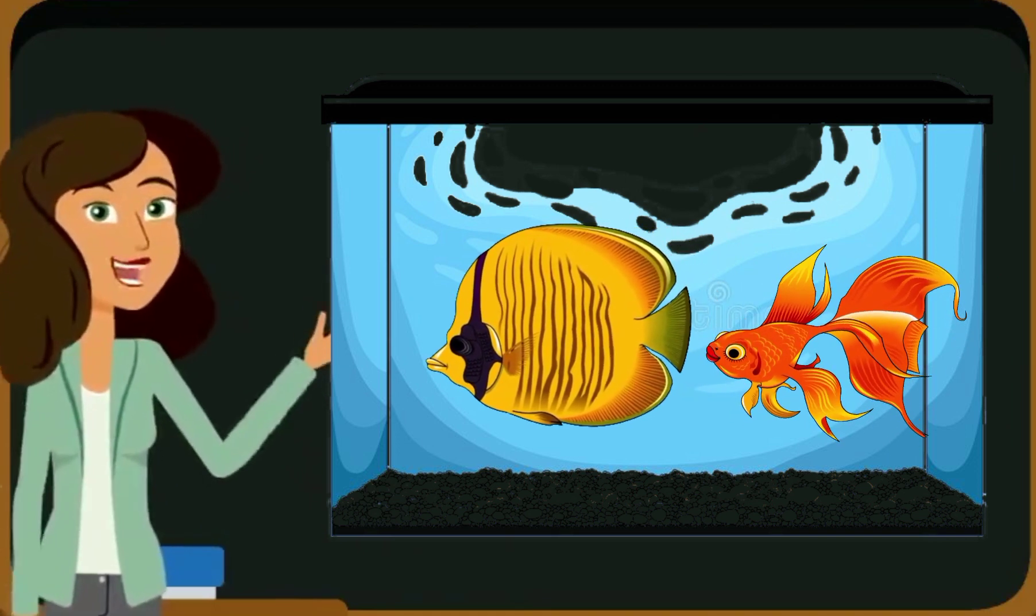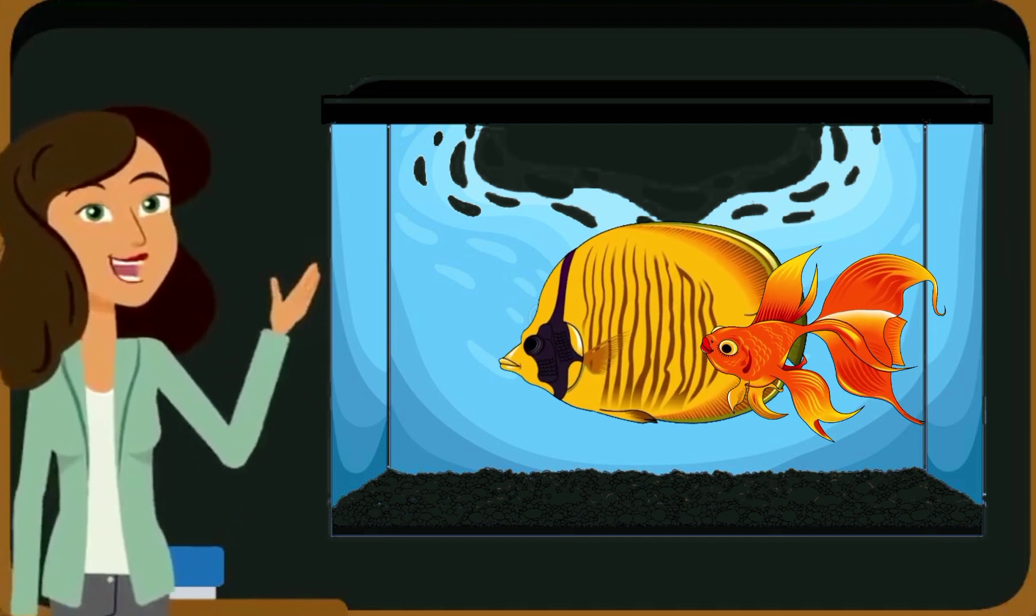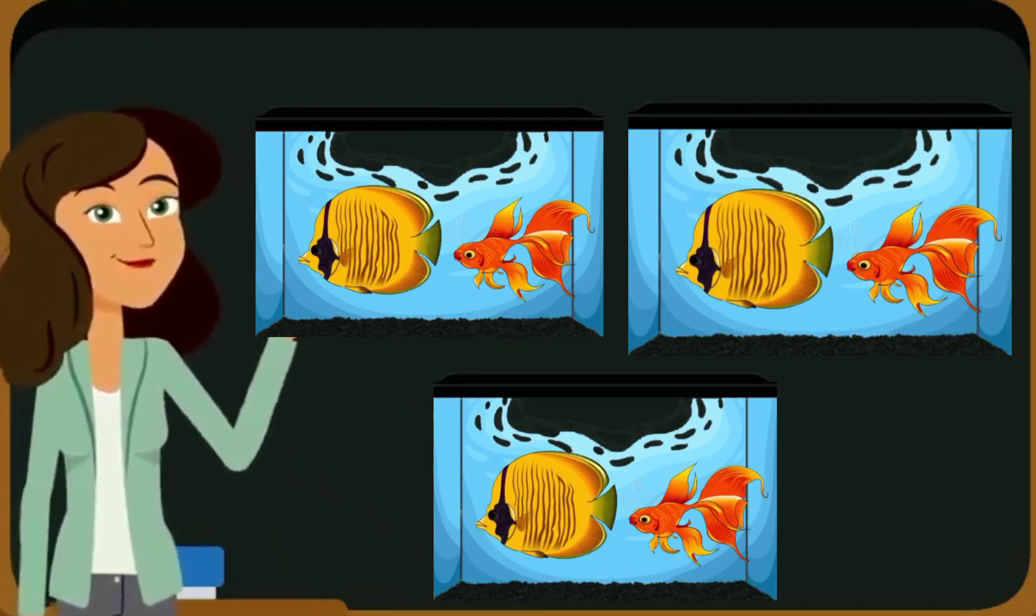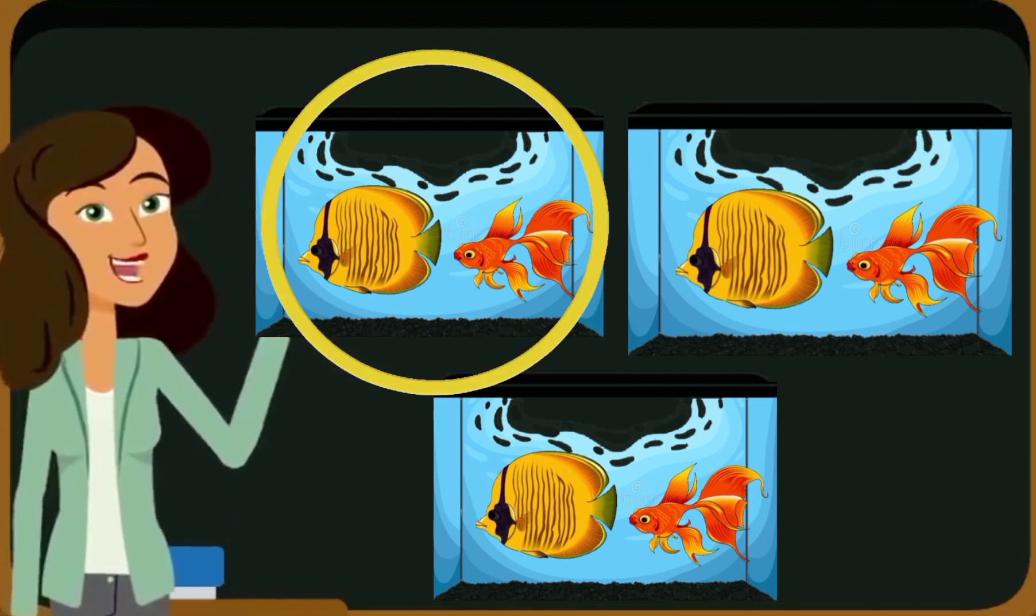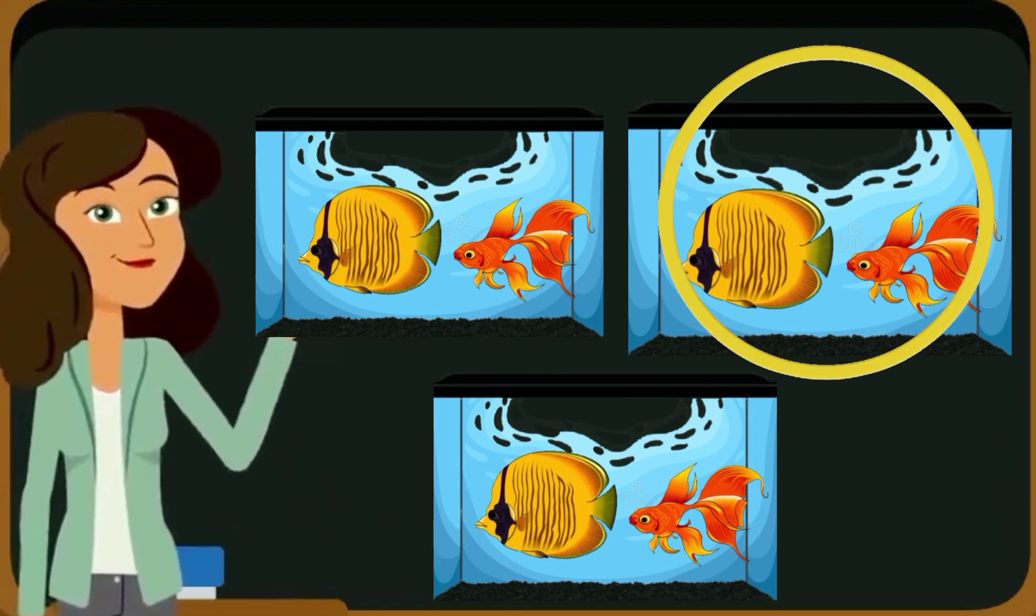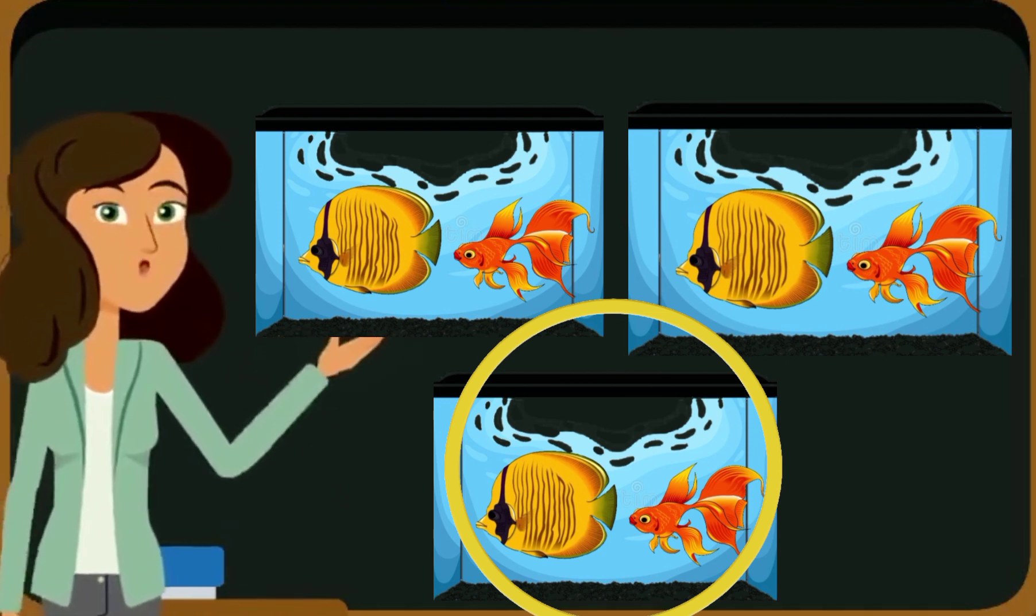Here we are taking a fish tank and we have two fishes in it. Now we are taking tanks three times: one, two, and three. And we have two fishes in tank number one, then two more, and then two more.